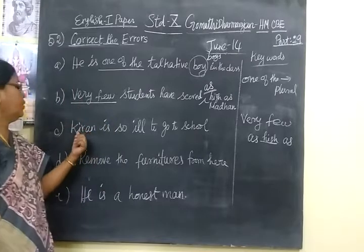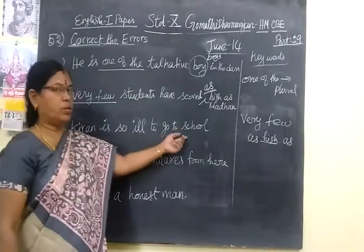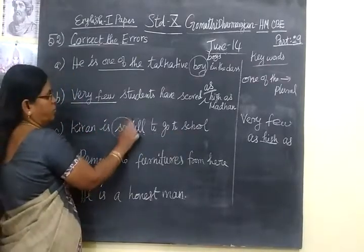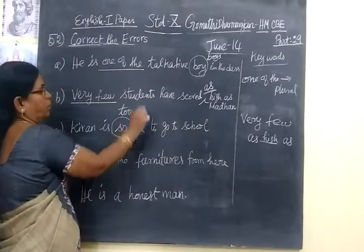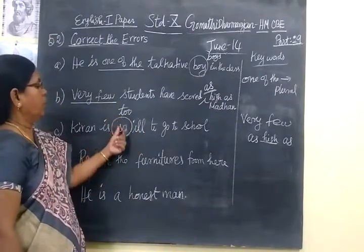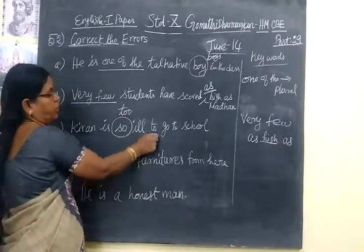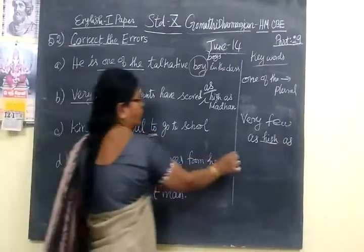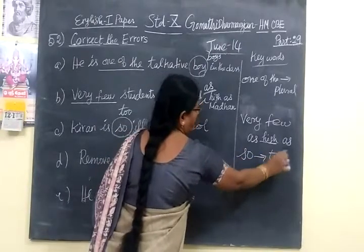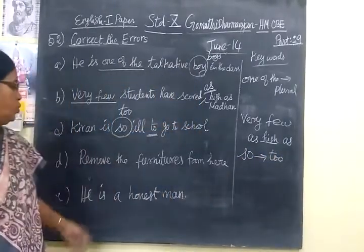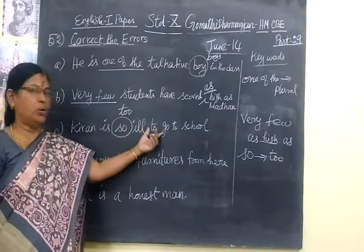Third one: 'Kiran is so ill to go to school.' The keyword is 'so.' Instead of 'so,' we are using 'too' — T-O-O. That is why it becomes T-O. The keyword is 'so' and we change it to 'too.' Correction: 'Kiran is too ill to go to school.'